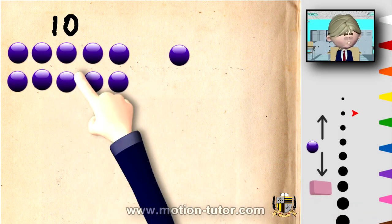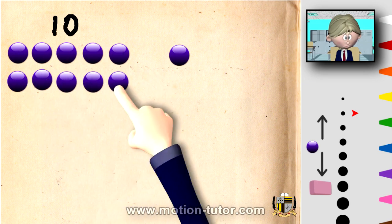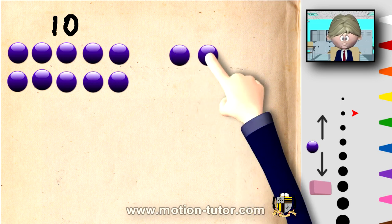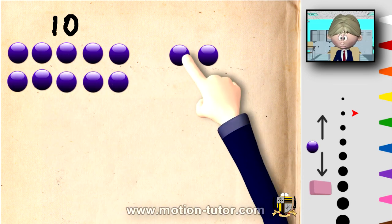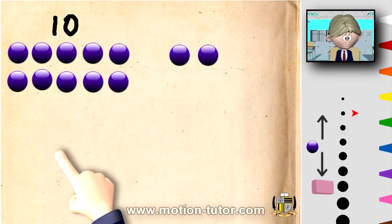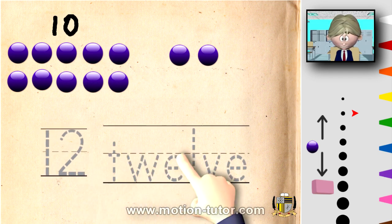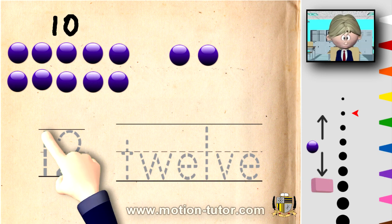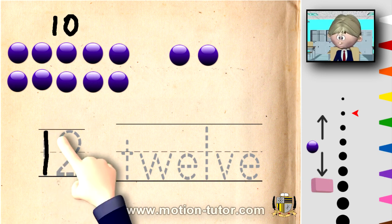Remember, this is 10. 1, 2, 3, 4, 5, 6, 7, 8, 9, 10, 11, and 12. So 10 and 2 more is 12. 12 looks like this. And that's how you spell it. So now let's write the number 12. 12 is a 1 and a 2.